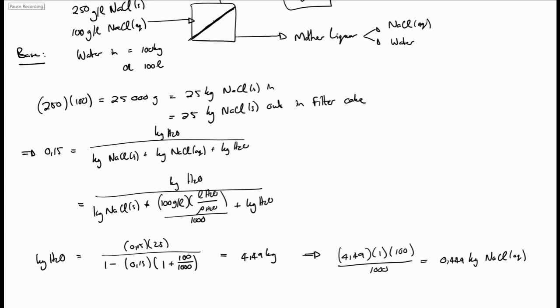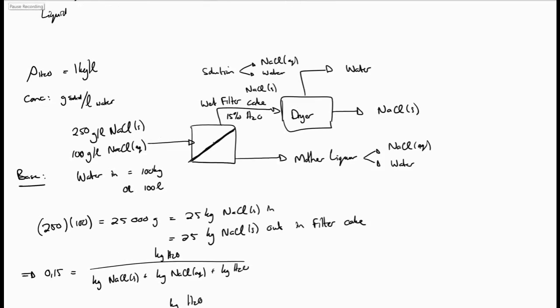Ironically, this is all we need to calculate to solve the complete mass balance. Going back to the diagram, we now know that 4.49 kilograms of water is leaving the dryer, which came from the filter cake. Thus, 100 minus that value equals 95.51 kilograms of water leaving with the mother liquor. The amount of sodium chloride leaving the dryer will be the 25 kilograms coming in with the wet filter cake plus the additional 0.449 kilograms that came in with the solution wetting the filter cake. Remember, once we dry the filter cake, the sodium chloride in aqueous form will not go out with the water from the dryer — it will form a solid and go out with the solids leaving the dryer.